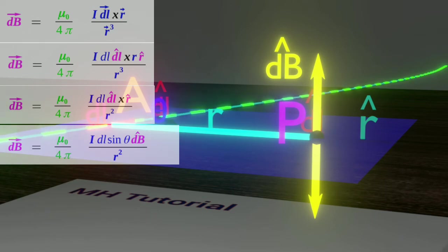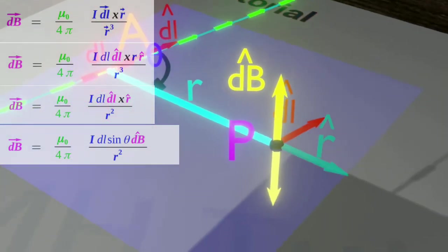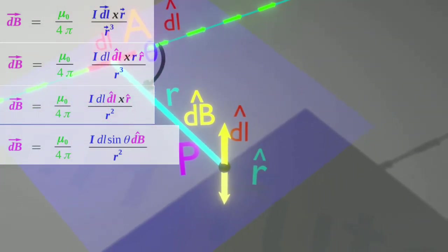And it is perpendicular to the plane that contains vectors DL and R. So we understand that cap dB is perpendicular to this plane. But to which direction? Upwards or downward?